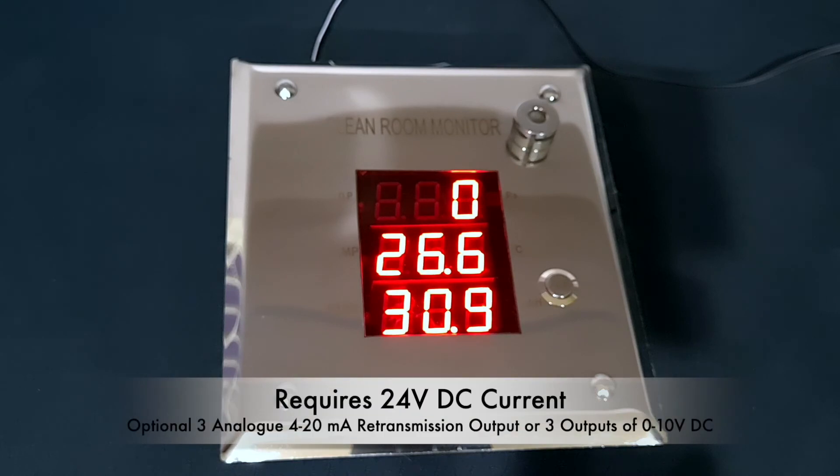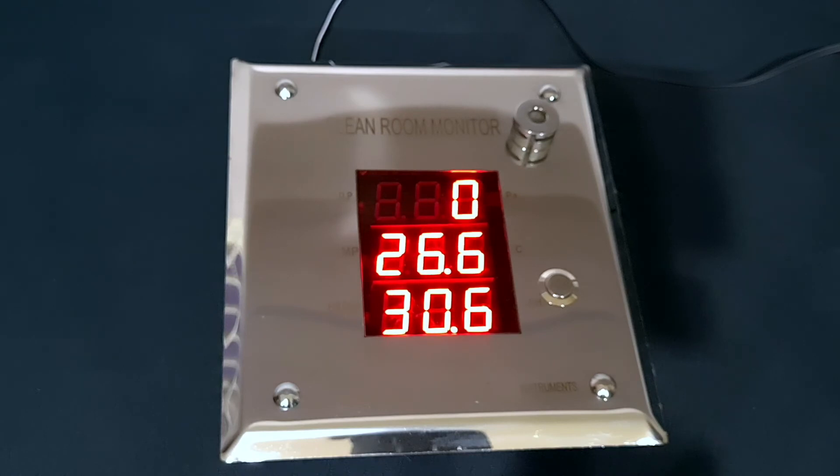The instrument works on 24 volts DC and has an optional three analog 4 to 20 milliamps retransmission output, or can also be provided with three outputs of 0 to 10 volts DC, one for each of the three parameters, selected at the time of ordering to enable the analog signals to be taken to a PLC or a SCADA, BMS, or EMS.